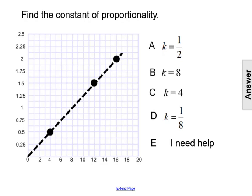Find the constant of proportionality in the graph below. So to find the constant of proportionality in any graph, we have to pick a point on the graph and then use the x and y values to find the ratio of y to x.